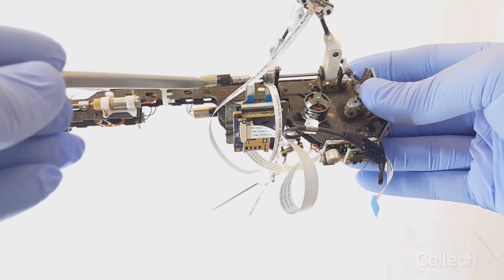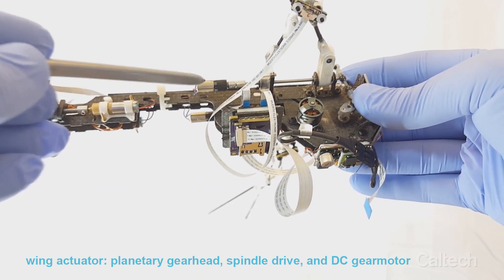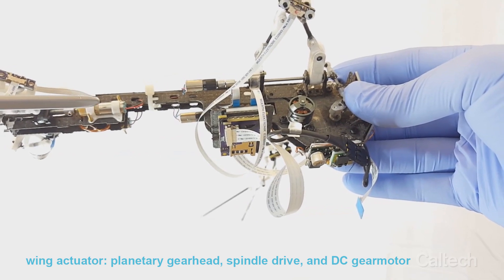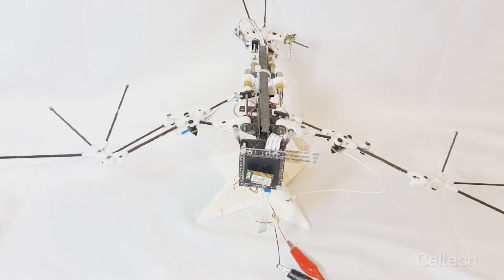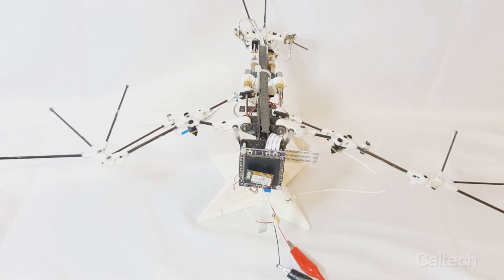Each wing actuator, which is composed of a planetary gear head, a spindle drive, and DC gear motor, produces the required linear motion. We have identified five dominant motions of bat flight and implemented those into the design of B2.